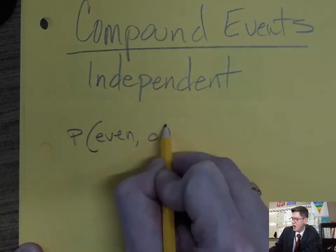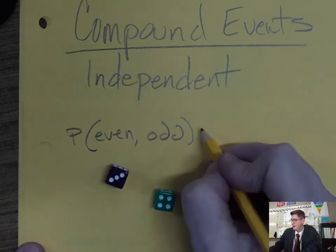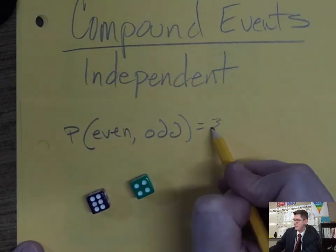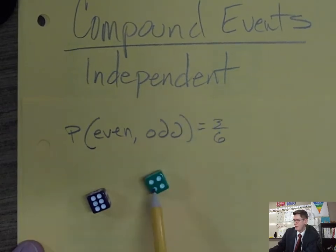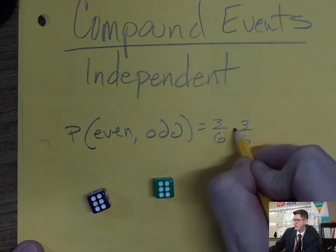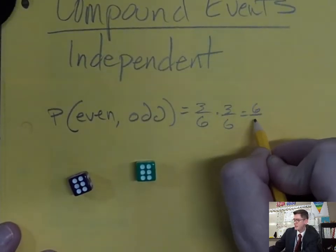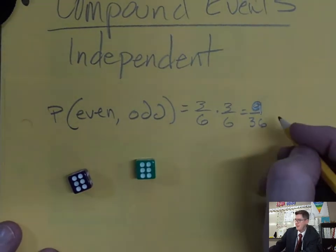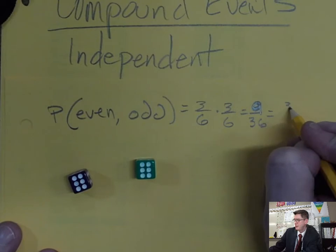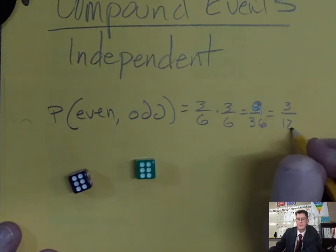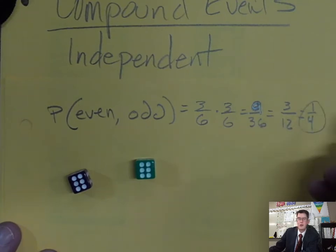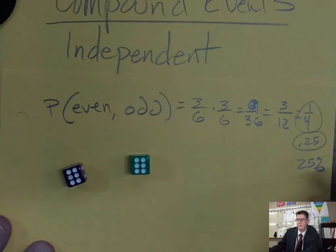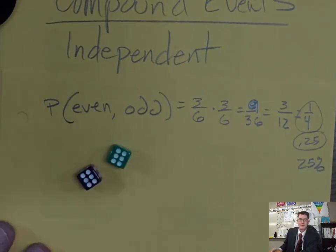What if I wanted to find the probability of getting an even number and then an odd number when rolling the dice? First, find the probability of an even number — there are three evens out of six. Then the probability of an odd — that's also three out of six. Multiply them together: three times three is nine, so it's 9/36, which reduces to 3/12, then to 1/4. The calculator gives you 0.25, or 25 percent.